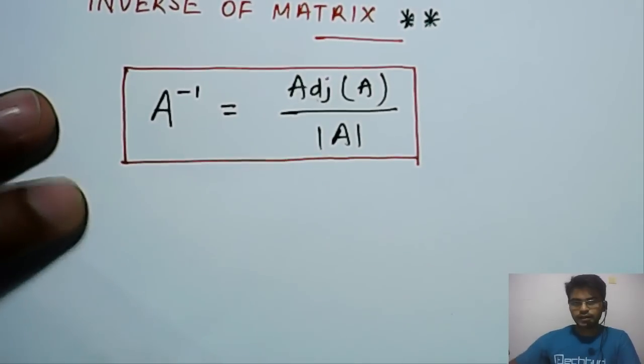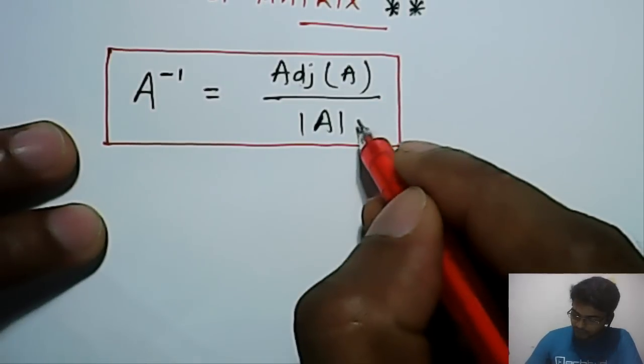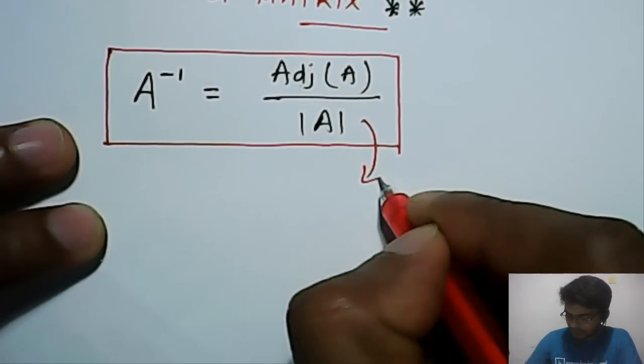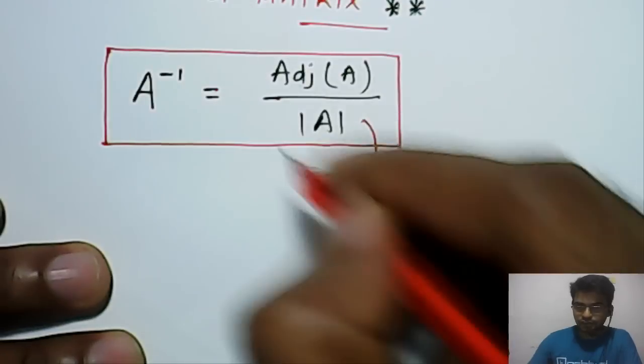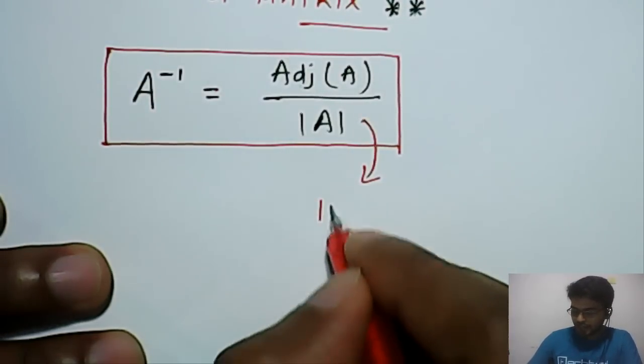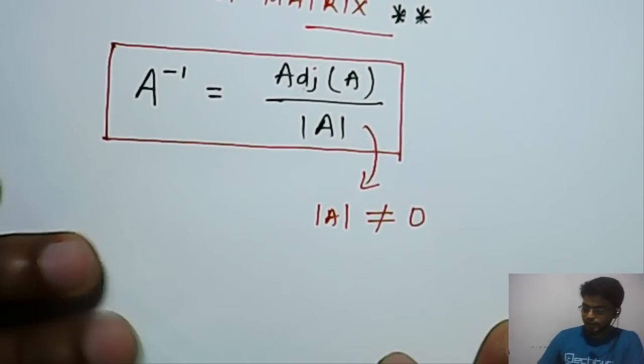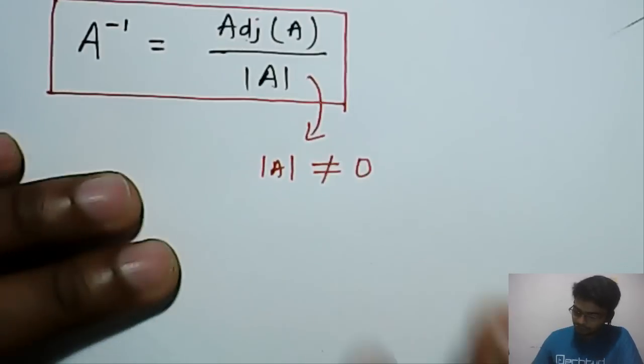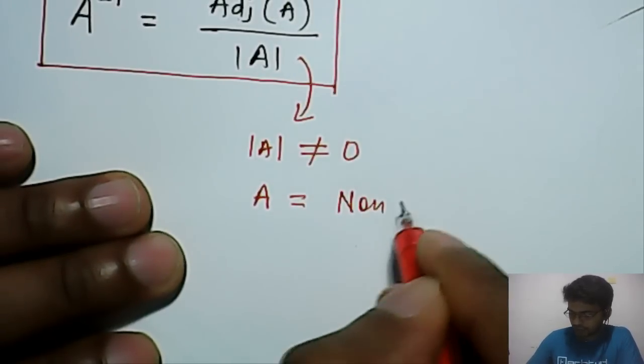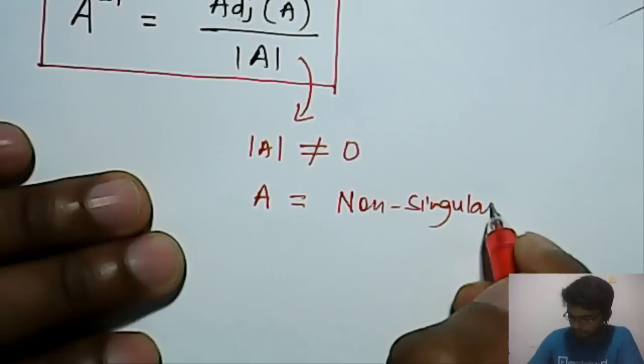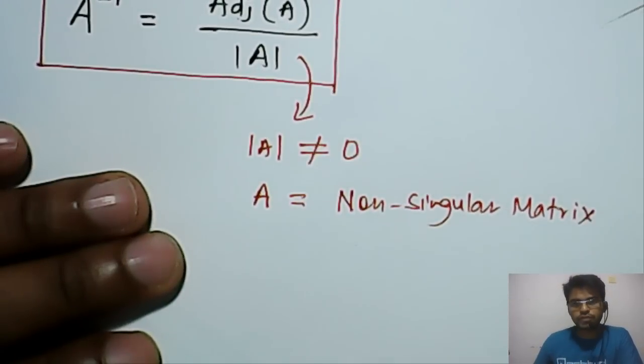Now, let's understand a few things. We will derive from here only. Here we have determinant A in denominator. So it means that to be defined, this entire thing to be defined, determinant of A should not be equal to 0. Otherwise, this will be a mathematical error. So it means that A will be a non-singular matrix.